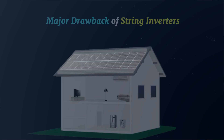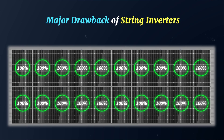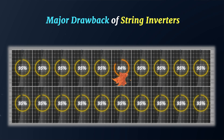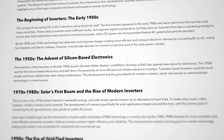The major drawback of this system is that if one panel underperforms — whether due to something as minor as a leaf falling on it or a technical issue — every other panel in that string is reduced to the output level of the lowest performing panel.